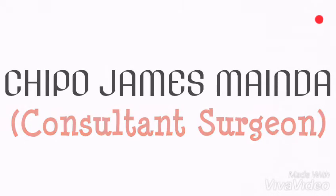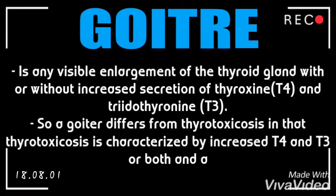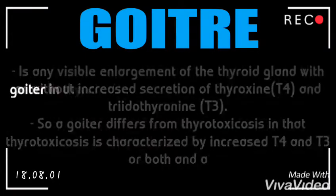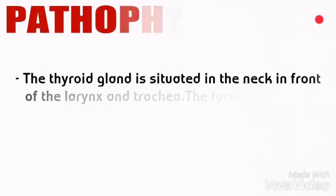Today we are going to talk about goiter. A goiter is any visible enlargement of the thyroid gland with or without increased secretion of thyroxine and triiodothyronine. A goiter differs from thyrotoxicosis in that thyrotoxicosis is characterized by increased thyroxine or triiodothyronine or both, and a goiter in thyrotoxicosis can come as a complication of hypothyroidism.